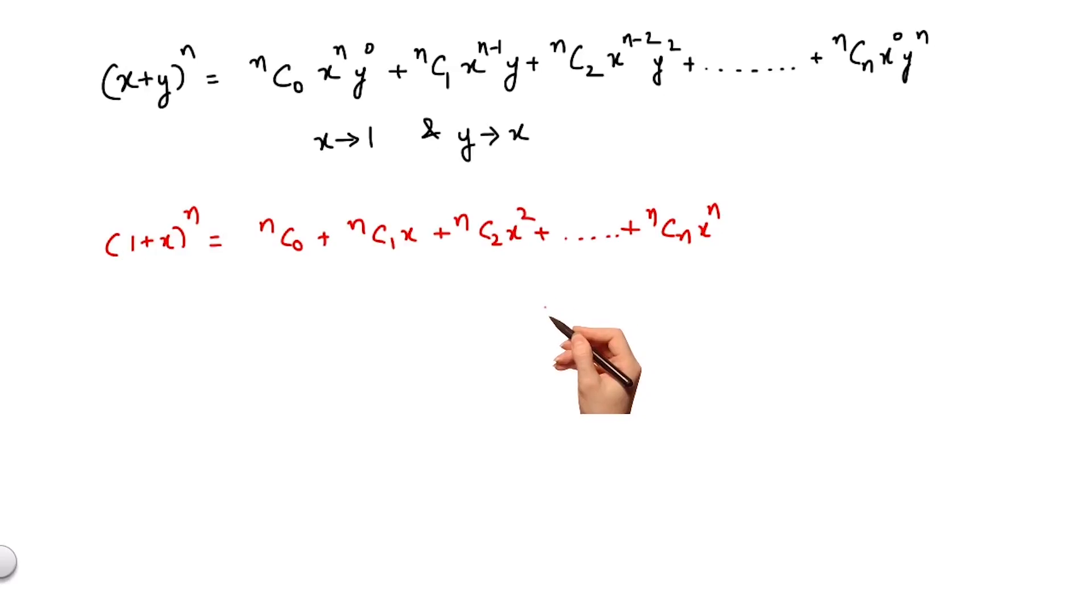In this expansion, the coefficient of x^r is nCr and the general term is given as t(r+1) = nCr·x^r. Let us mark this as equation 1.